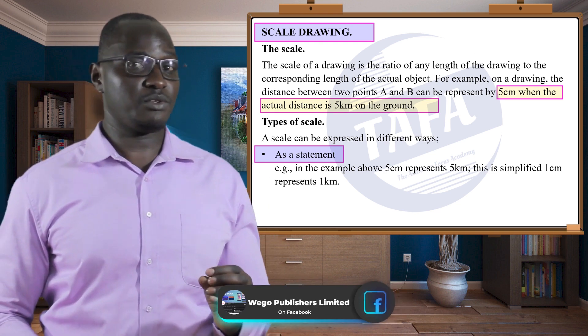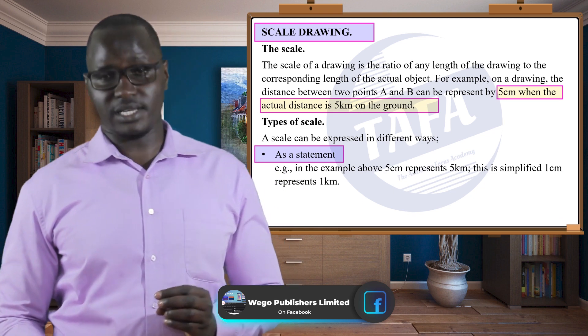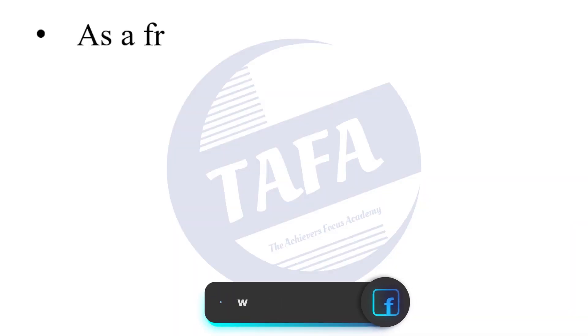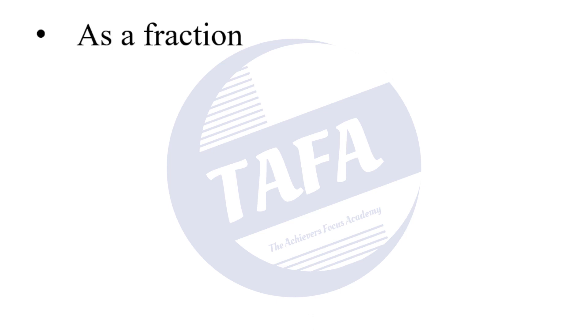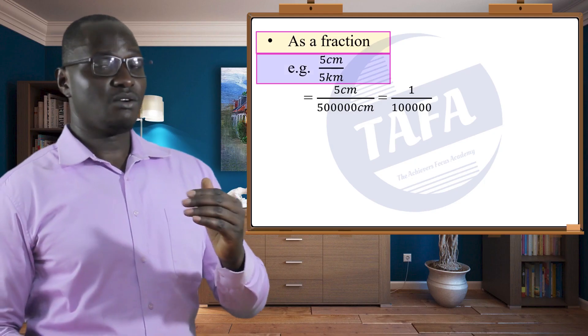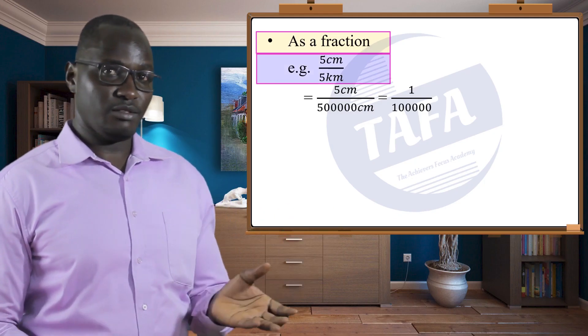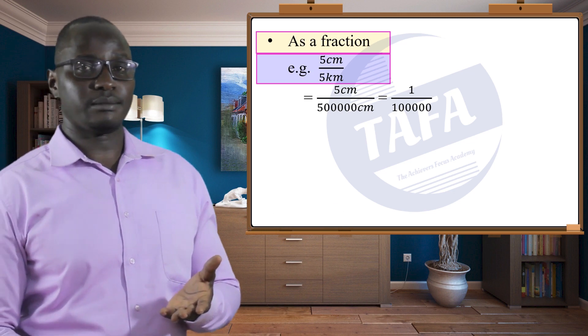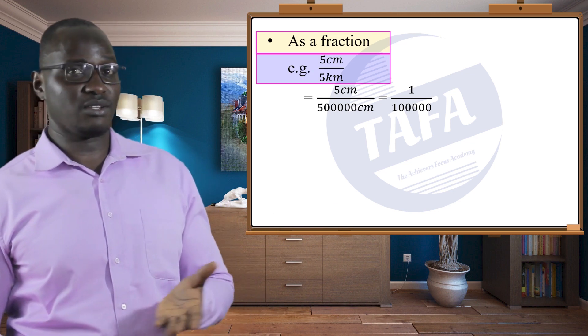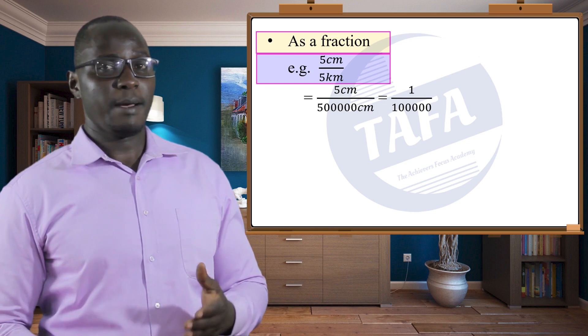Secondly, it can be expressed as a fraction. That is five centimeters over the actual distance on the ground, which is five kilometers. But as we express as a fraction, everything must be in the same unit.